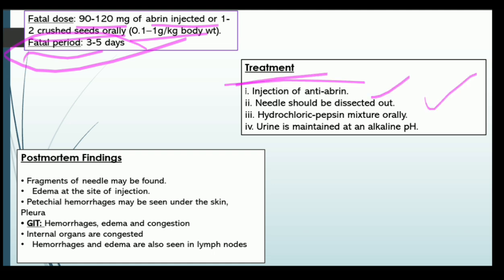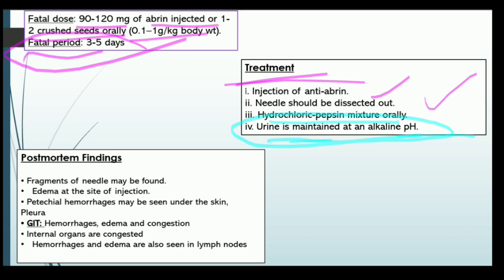For treatment: inject anti-abrine, and if a needle is present — as the extract is often given via injection — the needle needs to be dissected out from the body to reduce the effect. Hydrochloric pepsin is then administered naturally in the body, and urine is maintained at an alkaline pH.